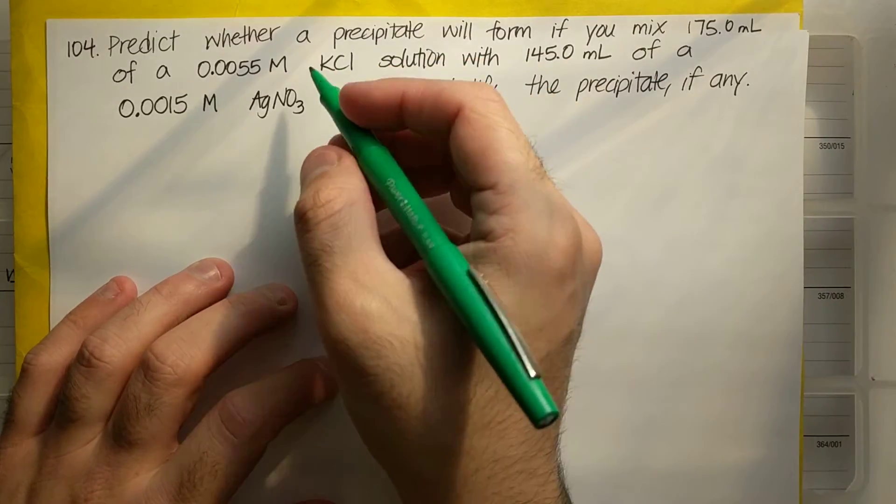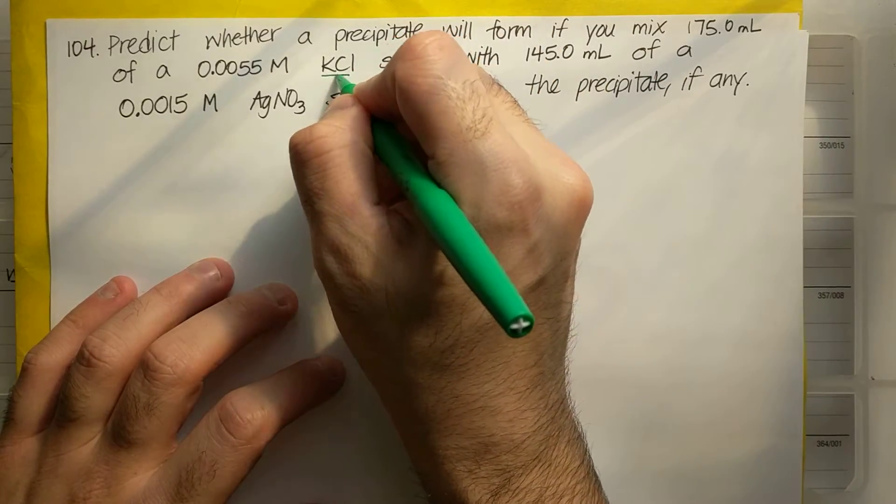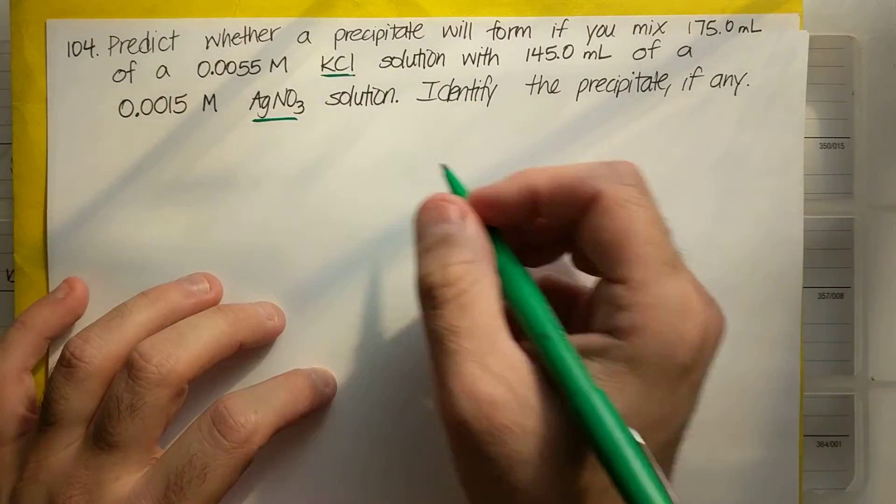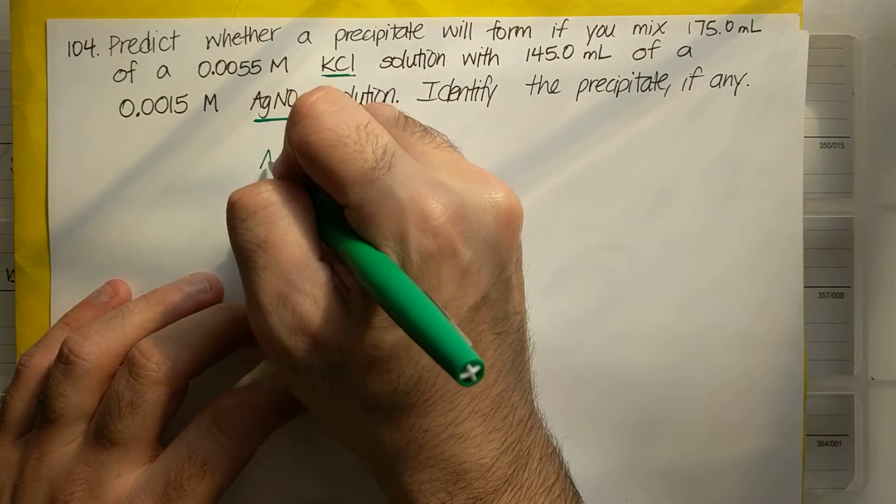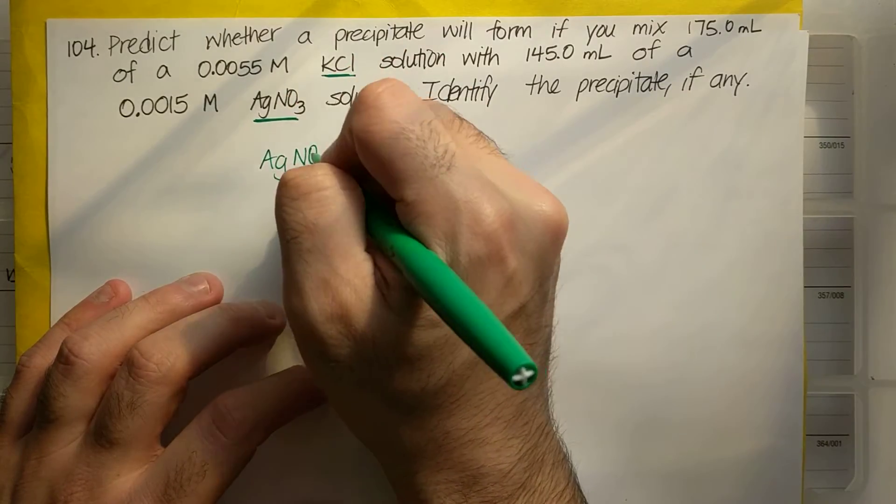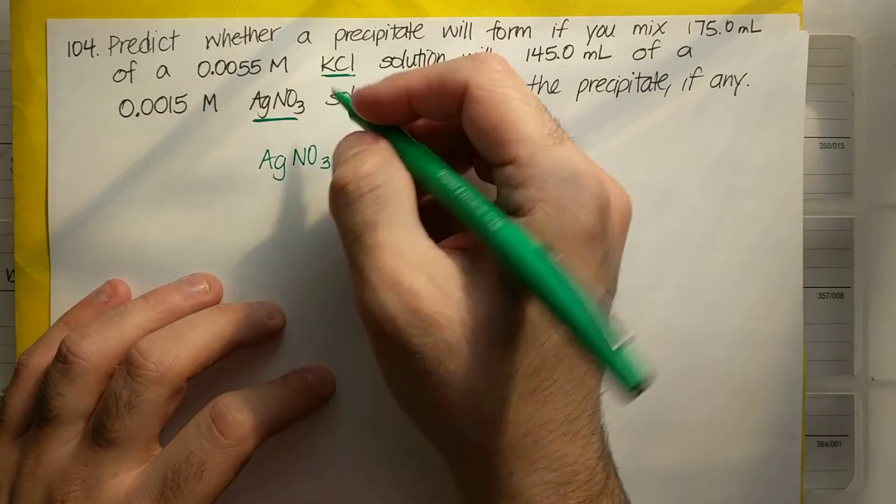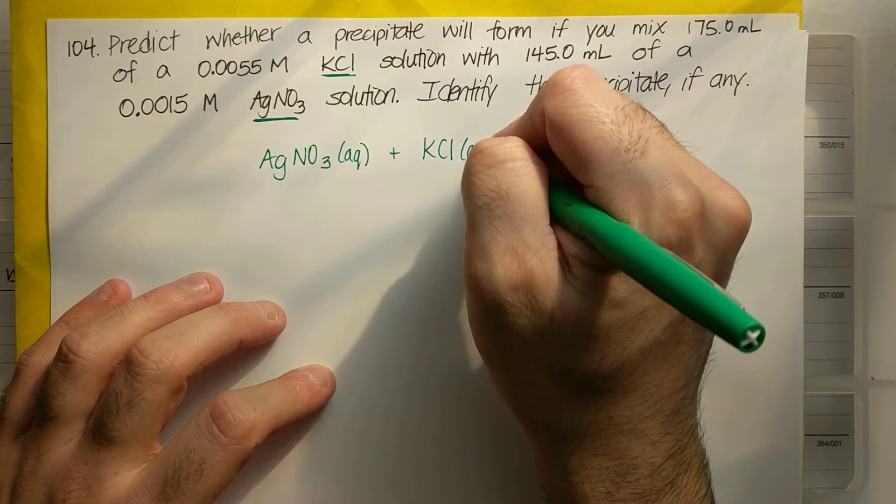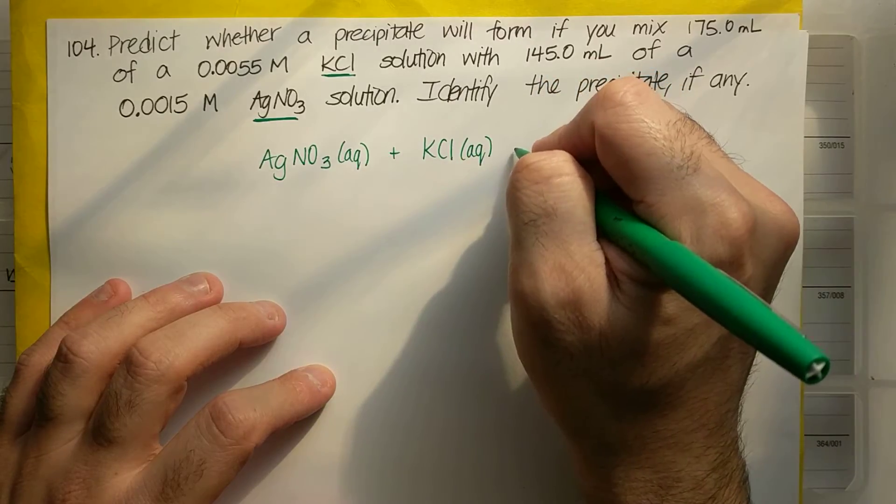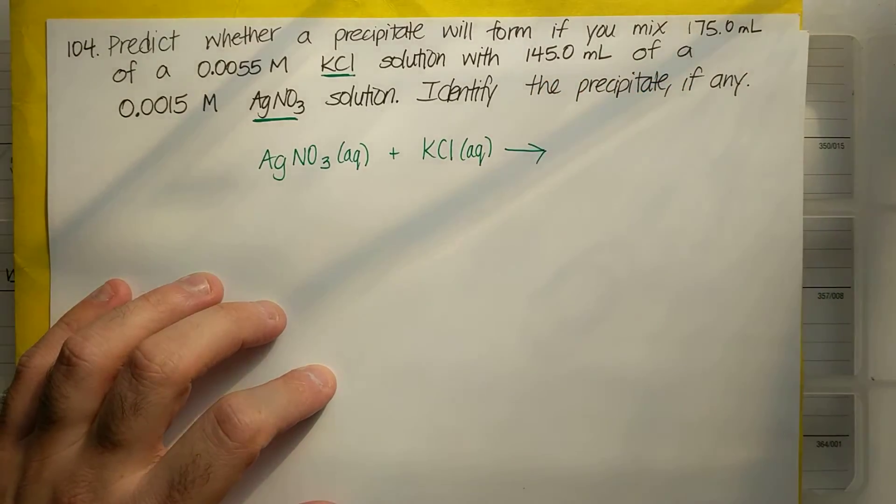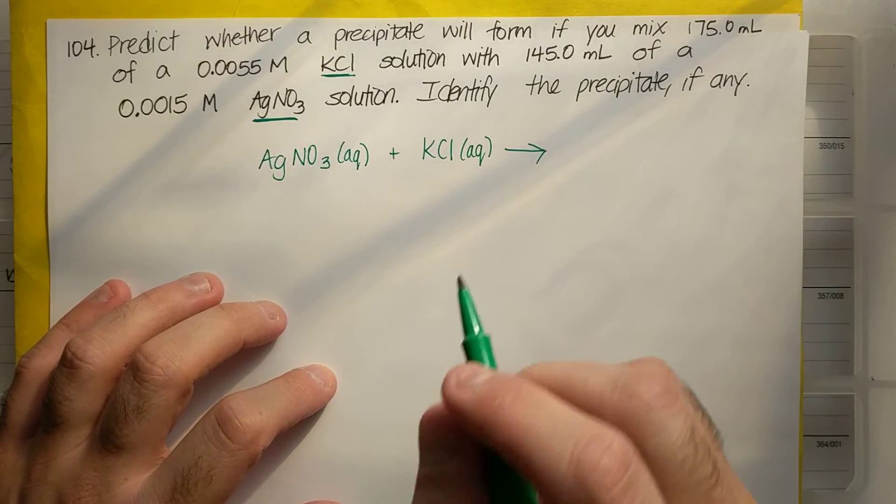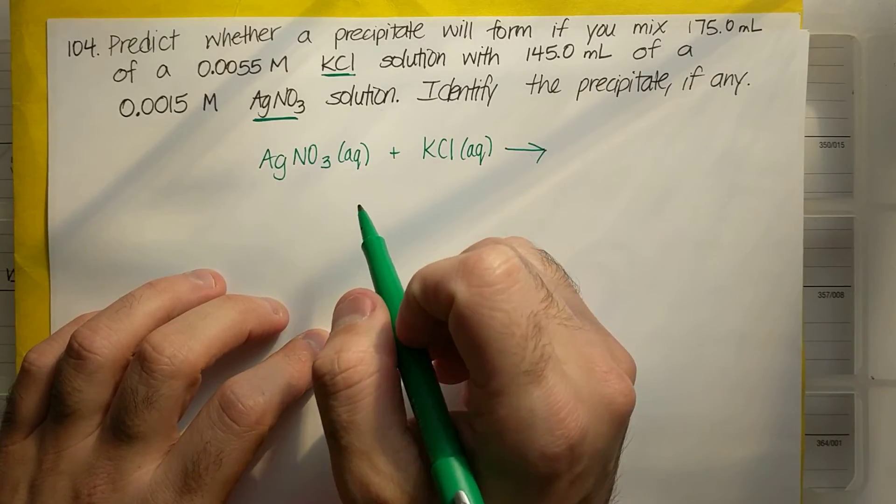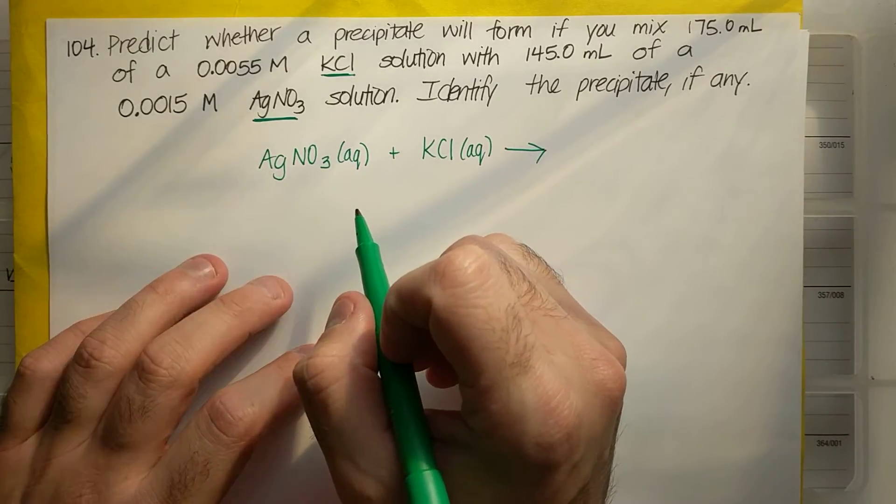So it says I added a KCl solution to AgNO3. So I'm gonna just write out that reaction. So I have AgNO3 and it's a solution. It has a concentration so this must be aqueous. Plus KCl is also a solution so it must be aqueous. And I'm gonna put a forward arrow for now. Now this goes way back in the day. Probably chapter three, four about how to write chemical equations.